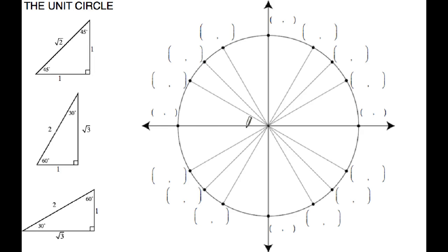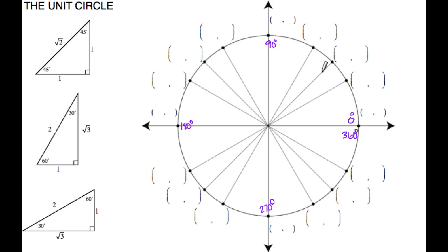Before we start talking about the ordered pairs, let's go ahead and start filling in your angle measurements. The unit circle has angle measurements in degrees and in radians, so I'm going to do the degrees first. This right here is 0 degrees, this is 90 degrees because it's your quadrantal angle, 180, and each quadrant is an increment of 90 degrees. If I were to cut 90 degrees in half, that would give me 45 degrees.